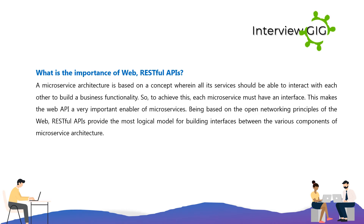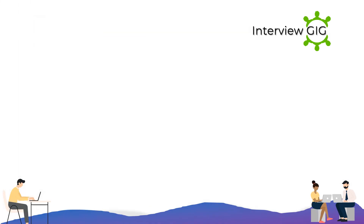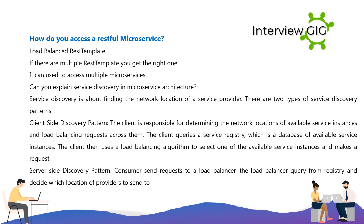What is the importance of web RESTful APIs? A microservice architecture is based on a concept wherein all its services should be able to interact with each other to build a business functionality. To achieve this, each microservice must have an interface. This makes the web API a very important enabler of microservices. Being based on the open networking principles of the web, RESTful APIs provide the most logical model for building interfaces between the various components of a microservice architecture.